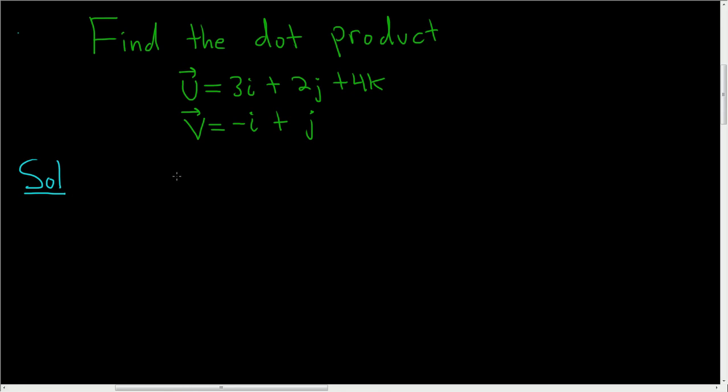So before we do that, you might notice that there's no k here in the second vector V. So we can actually put it there by writing plus 0k.